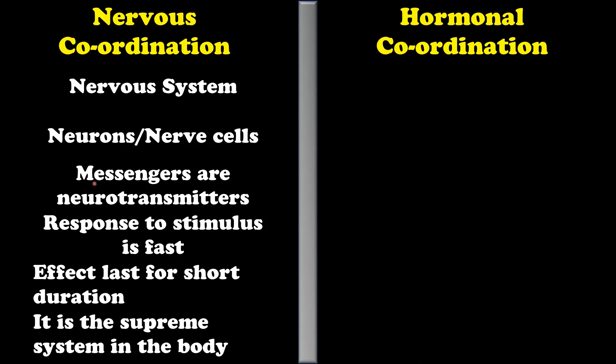These neurons secrete neurotransmitters such as acetylcholine. In case of nervous coordination, response to stimulus is fast, but the effect lasts for a very short duration. This nervous coordination is the supreme system in our body, which controls all other systems.